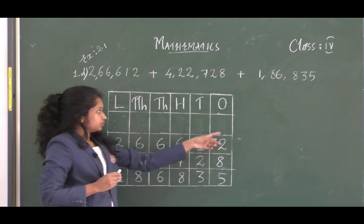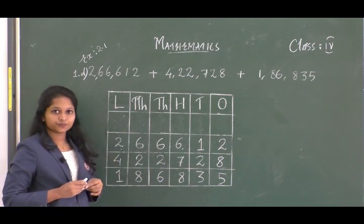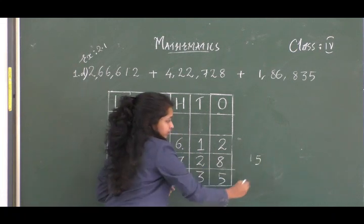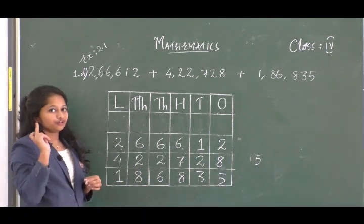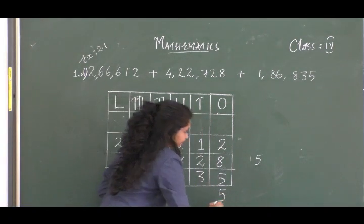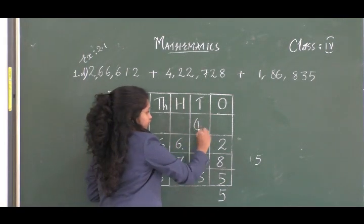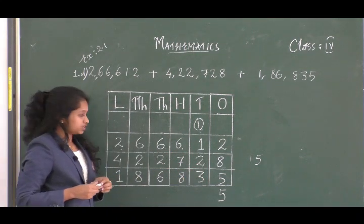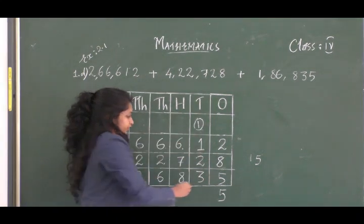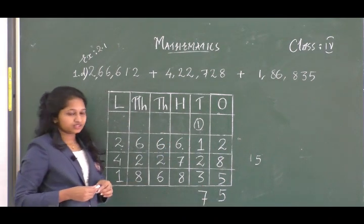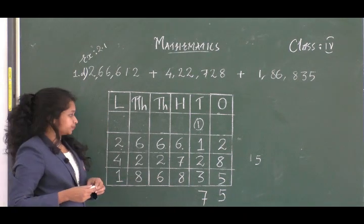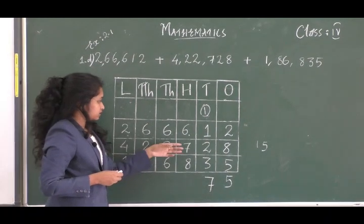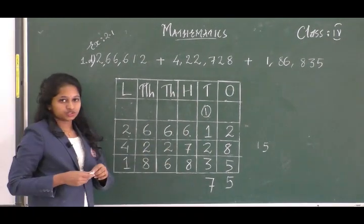When you add the ones column you will get 15. Write the 5 in the ones place and 1 goes to carry. Now add the tens place — you will get 7 in total, there is no carry. Now let us move on to the hundreds place: 6 plus 7 plus 8.